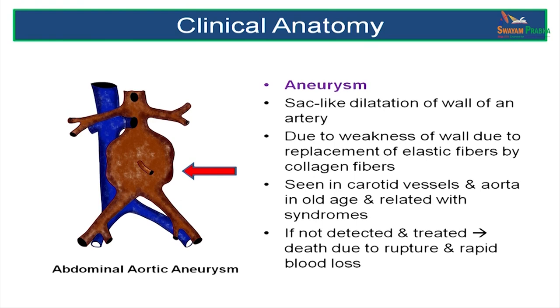An aneurysm is a bulging or dilatation of the vessel wall — sac-like — and can occur in any artery. Here you see an aneurysm of the abdominal aorta. It could be due to weakness of the wall or replacement of elastic fibres by collagen fibres. It is commonly seen in the carotid vessels and aorta in old age and is related to various syndromes. If an aneurysm is not detected on time, it could rupture leading to fatal haemorrhage.